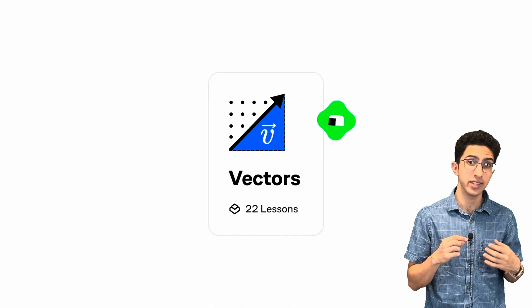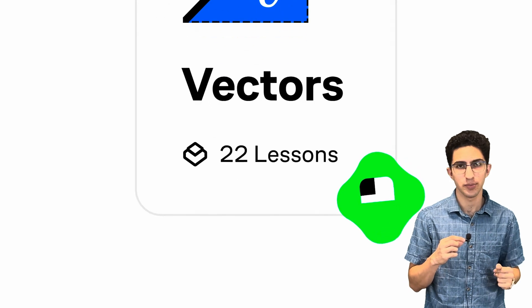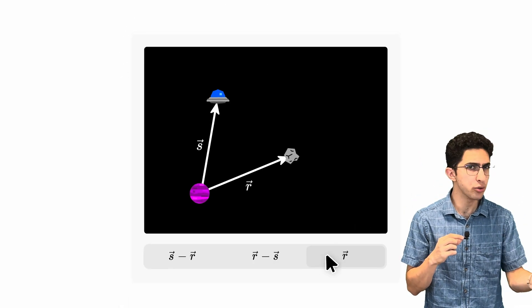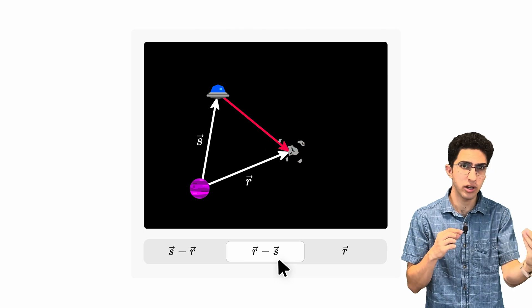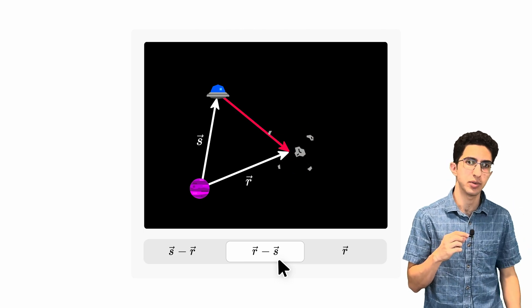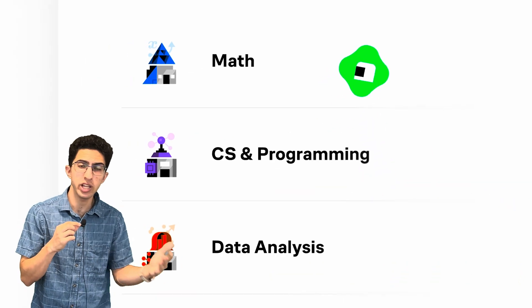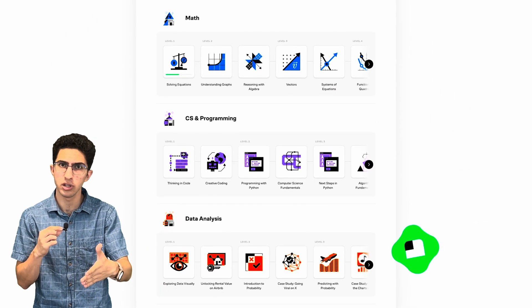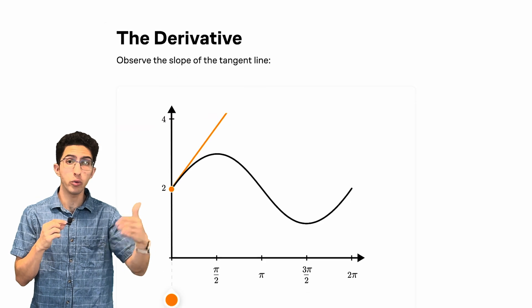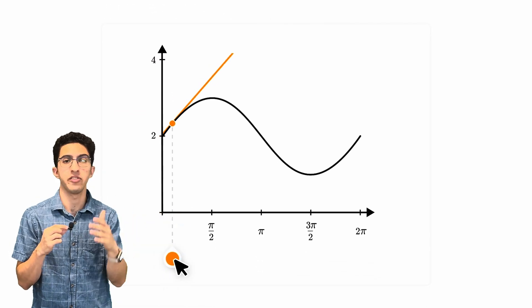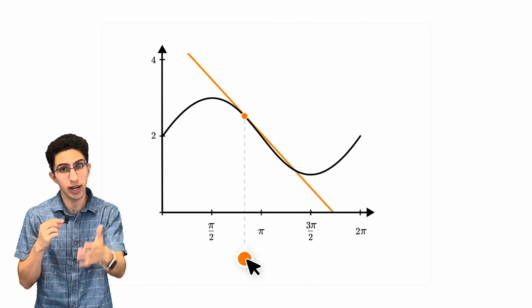One of my favorite courses on Brilliant is their course on vectors. This course helps you visualize vectors in 2D and 3D, making abstract concepts much easier to grasp. And that's true for so many of the other math courses Brilliant offers, from more foundational topics like solving equations and functions, all the way to advanced topics like vector calculus and linear algebra.